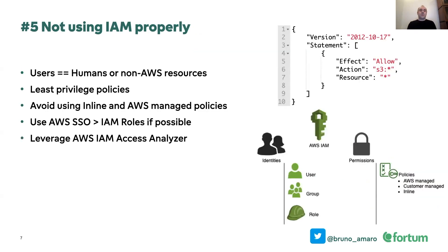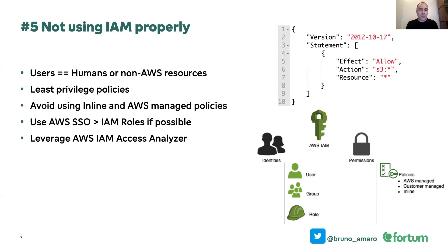The next pitfall is not using IAM properly. I touched on this earlier — when you create a new AWS account, you should start using IAM instead of the root account. But what I usually find is that people are not really using it properly, and that's a big no. If you look at the policy statement on screen, you'll see the resource set to asterisk — everything allowed. I'm guilty of this myself throughout my career; I think everyone who has worked with AWS did this at some point. But it's a lot easier now to start doing the right thing, so pay attention — especially when building something for production. Make sure you're using least-privileged policies.